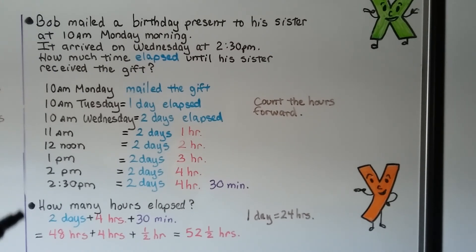So how many hours elapsed? Well, one day is 24 hours and it was two days. Two times 24 is 48. That's 48 hours. Plus that four hours, and plus the 30 minutes, which is a half hour. It took 52 and a half hours for it to arrive in the mail.